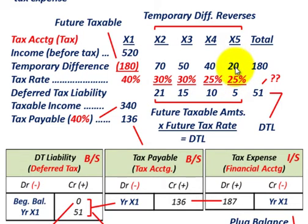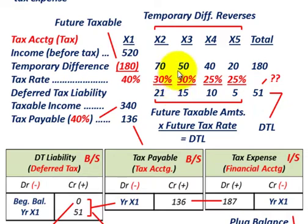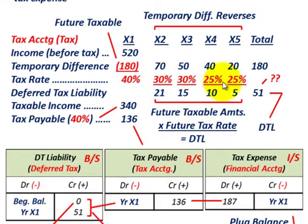Finally, in the fifth year, $20,000 times the 25% tax rate gives us a deferred tax liability of $5,000. Our total deferred tax liability — summing those amounts across year X2 through year X5 — is $51,000. That's all based on the future taxable amounts: the reversing amounts based on our beginning temporary difference times the future tax rates.